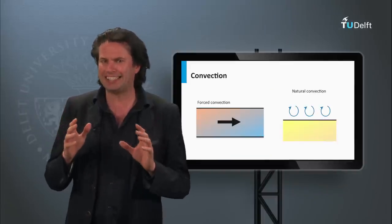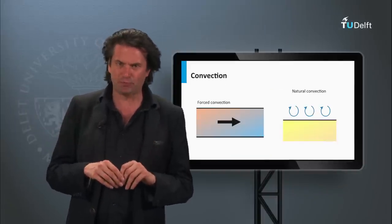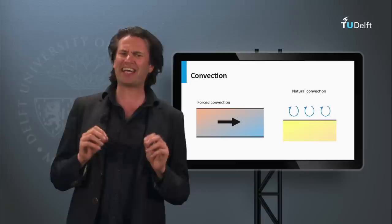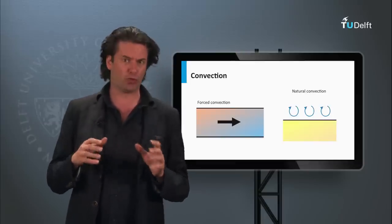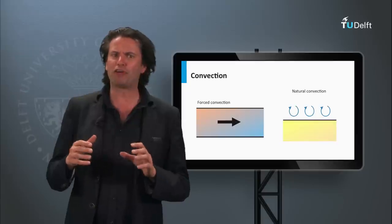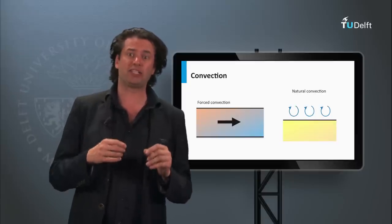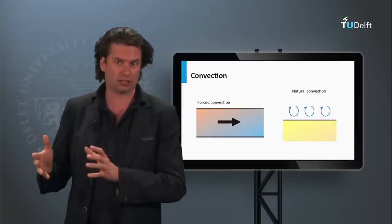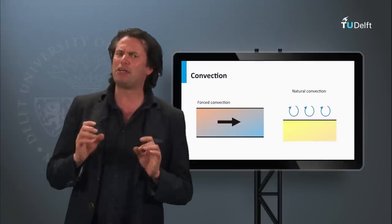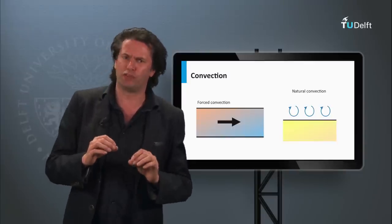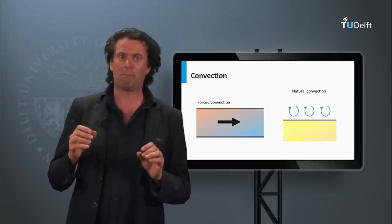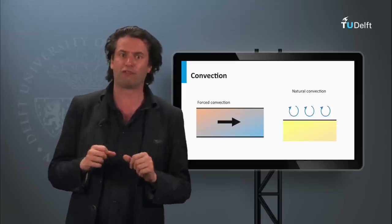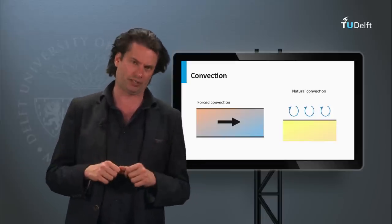Convection is the second possible mechanism for heat transfer. Convection is the transfer of heat by the movement of a fluid. When a moving fluid is hot, it will transport that heat with its mass. Convection can be forced when the movement of the fluid is caused by external variables, or natural by the density difference caused in the fluid due to the temperature gradients.